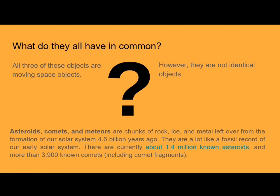So what do they all have in common? All three of these objects are moving space objects. However, they're not identical. Asteroids, comets, and meteors are chunks of rock, ice, and metal left over from the formation of our solar system 4.6 billion years ago. They are a lot like a fossil record of our early solar system. There are currently about 1.4 million known asteroids and more than 3,900 known comets, including comet fragments.